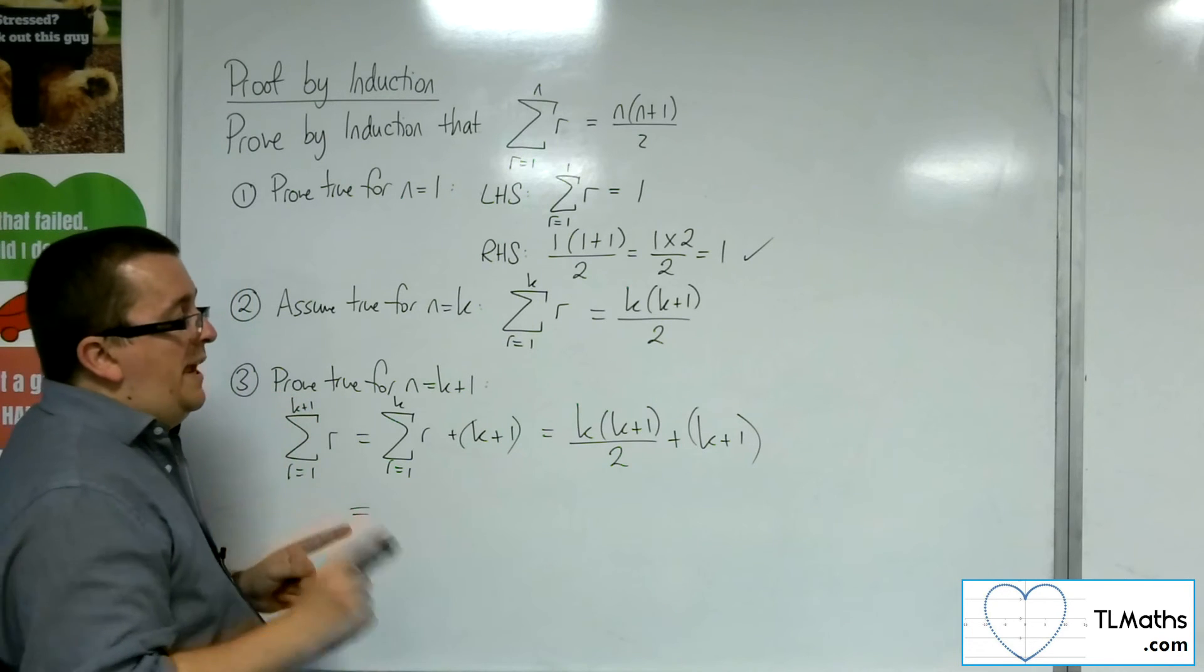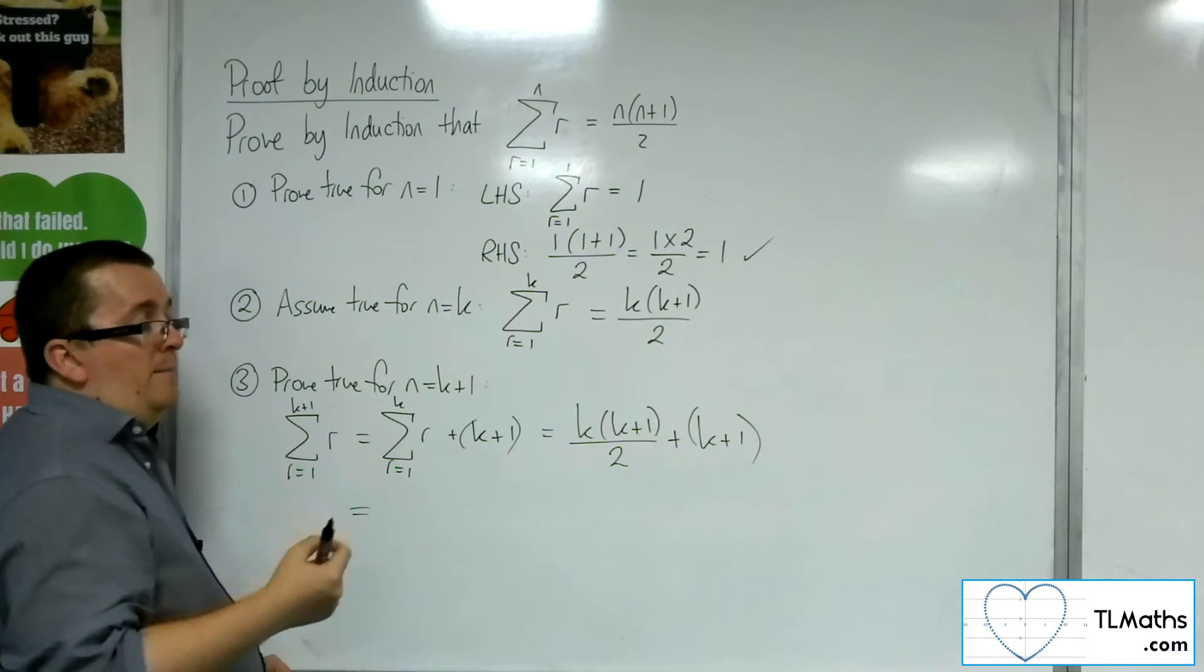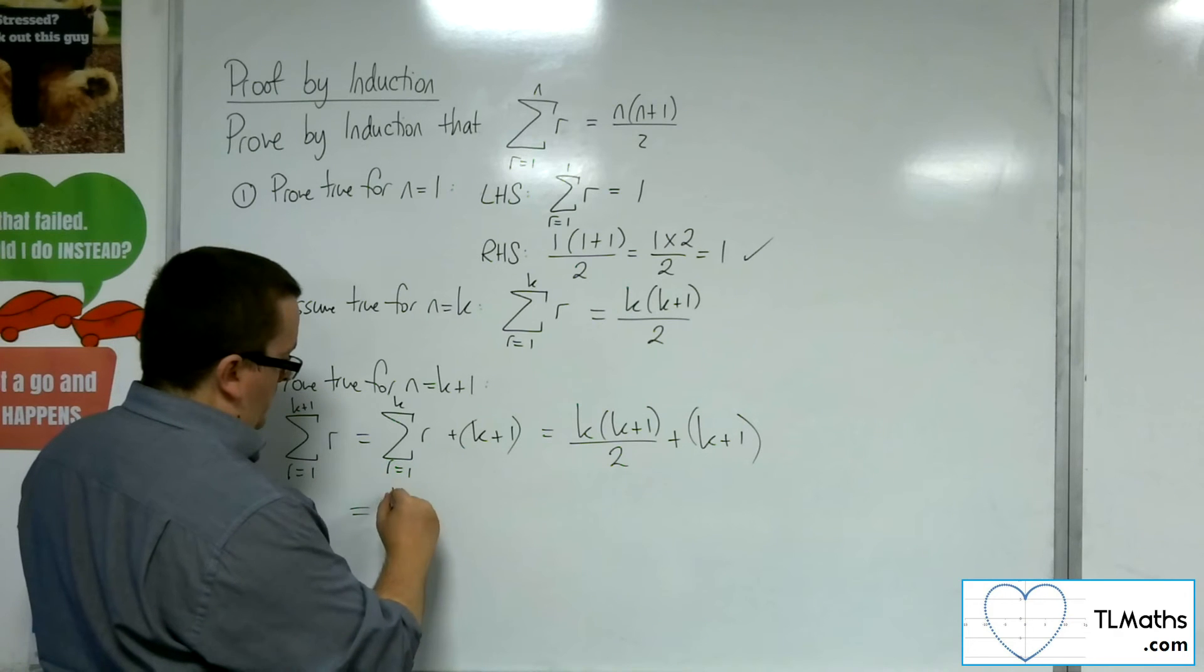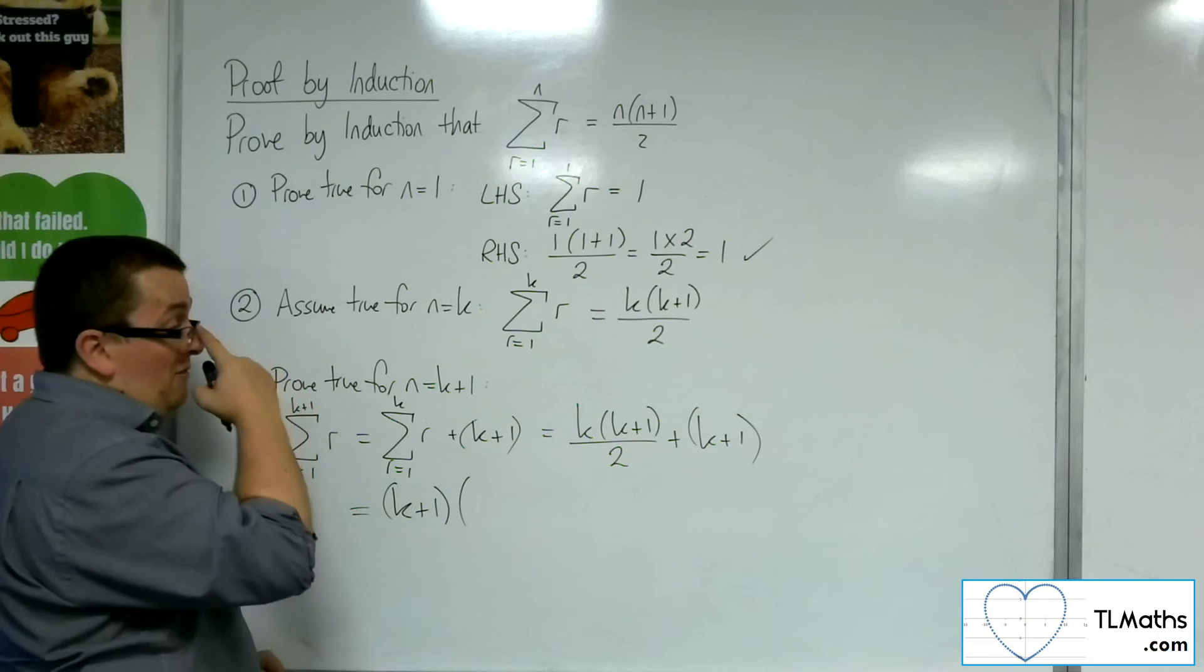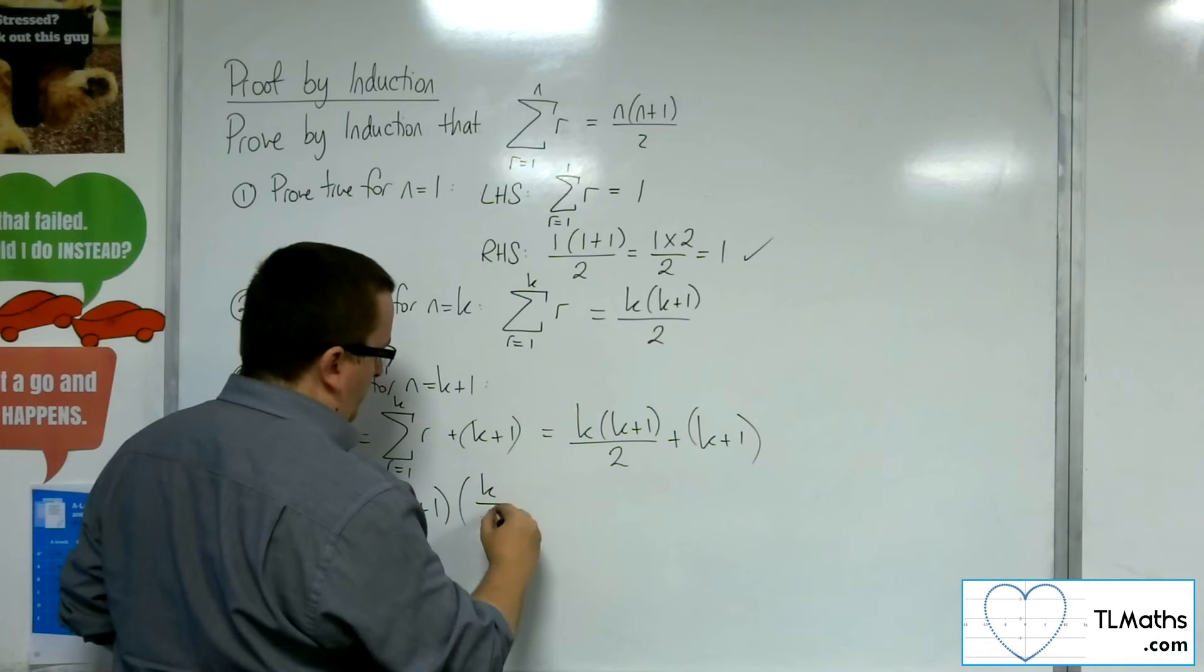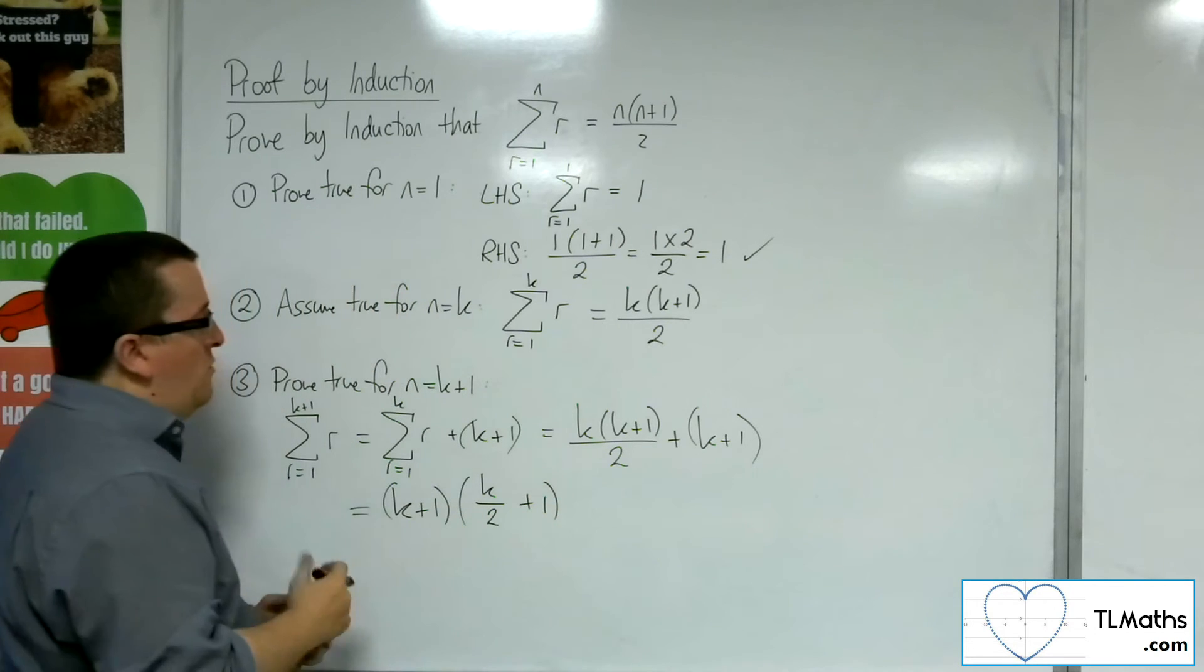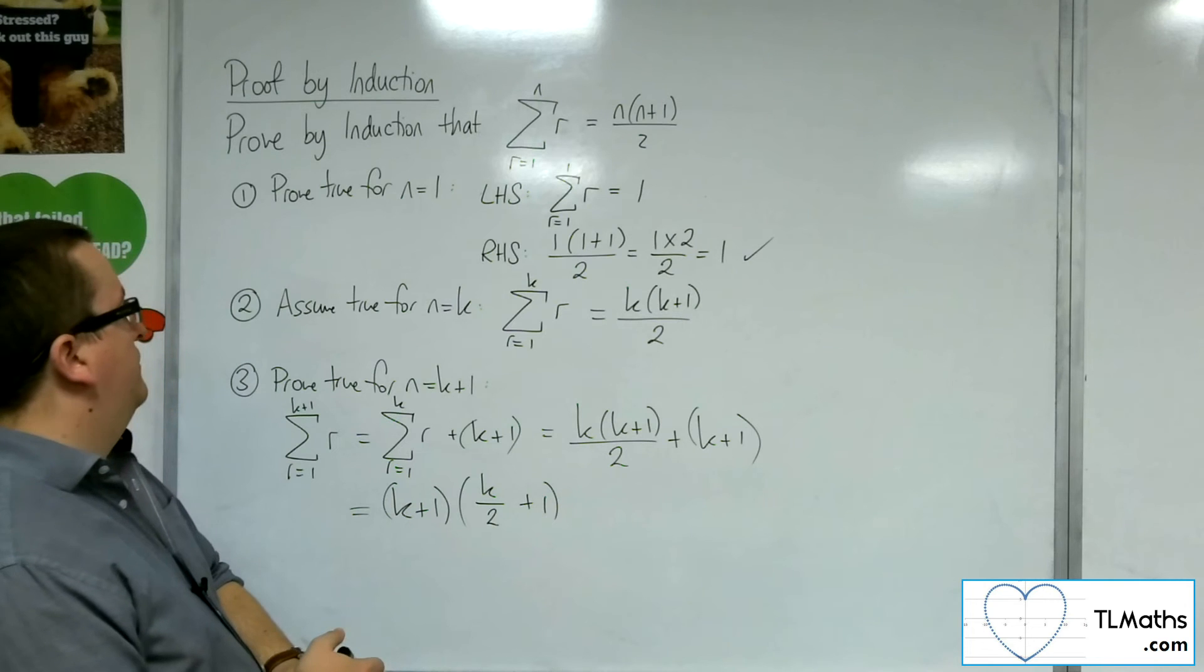So I'll pop that in a bracket just so we can clearly identify that it is this other term. Now notice how we've got a k plus 1 here and a k plus 1 there. So that means we can factor k plus 1 out. Now what have I got left? Well, I've got this k over 2 plus 1. Because if I expanded those brackets now, I would arrive at this expression here.